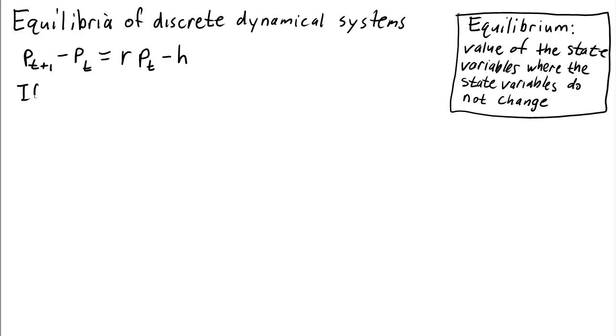For example, if the value of the state variable P_t is some equilibrium, let's call that e - it's just a number, the equilibrium size. So if this value e is an equilibrium, then the idea is that the population size doesn't change or the state variables don't change.